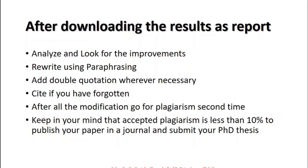Cite anything you have forgotten. After all modifications, go for a second plagiarism check — only then will you be able to verify whether your updates have reduced the plagiarism. Keep in mind that the accepted plagiarism rate is less than 10 percent for both journals and PhD theses. If it goes above 10 percent, you need to reduce it before you can submit, otherwise they will not accept your thesis or journal paper.